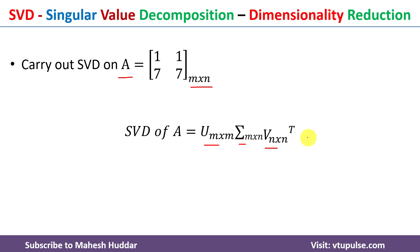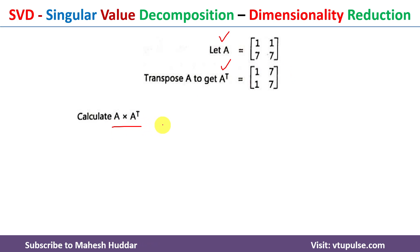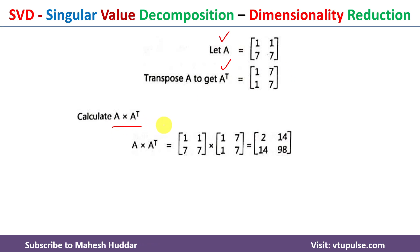To get these three matrices we follow a simple procedure. First, we have the matrix A with two rows and two columns. Next, we calculate the transpose of A, where rows become columns and columns become rows. Once we have A transpose, the next step is to calculate A multiplied by A transpose.